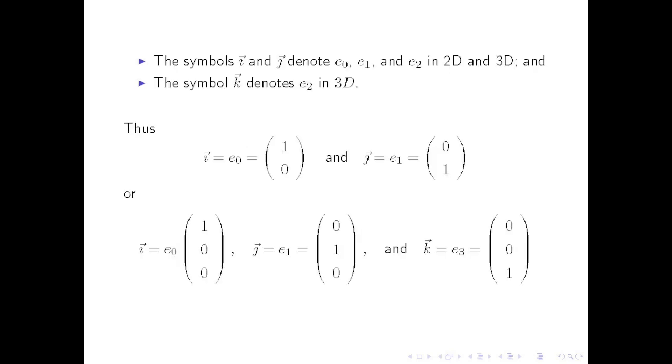Now, where have we seen this before? If you took a course in physics, you likely encountered the symbols i, j and k with a vector above these letters. We will pronounce these symbols vec i, vec j and vec k.